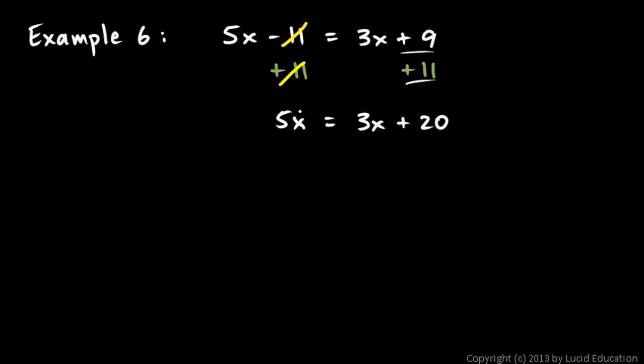Now we still have an x on the left and an x on the right, but watch this. I'm going to get rid of this 3x right here. And I can do that just by subtracting 3x. And I can do that as long as I also do it over here. Whatever you do on the right, you also have to do on the left. Now here's my equals sign. And on the right side, I have 3x plus 20 minus 3x. And it should make sense to you that the 3x and the minus 3x cancel out.